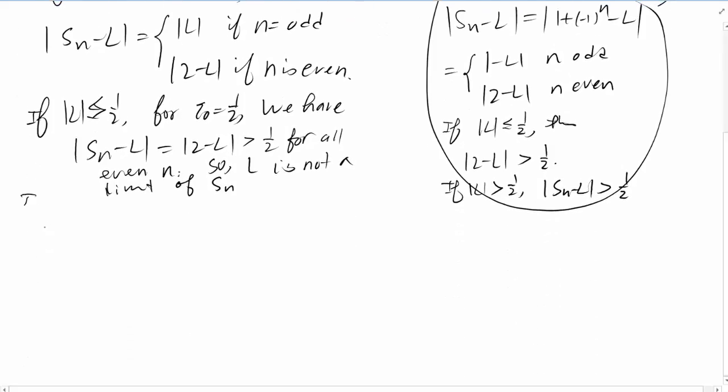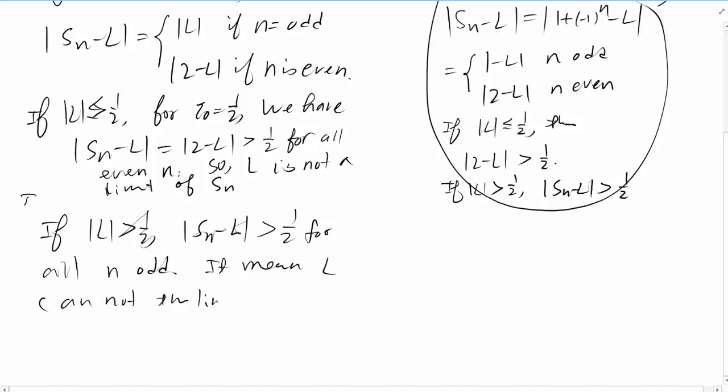If |L| > 1/2, then |Sn - L| > 1/2 for all n odd. This means L cannot be the limit of Sn.